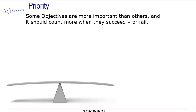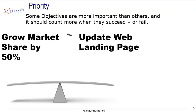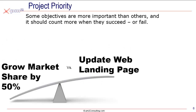For example, if we have two objectives — let's say grow market share by 50% and another one, update the web landing page — these two objectives, although both important, are not of equal priority. The grow market share by 50% takes considerably more effort and is considerably more strategically important to the organization than updating the web landing page. So we need to make sure that as you earn points, we recognize that.